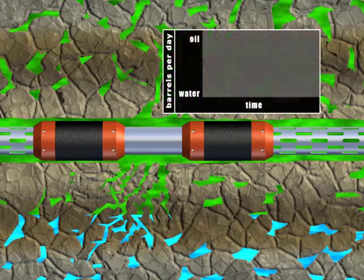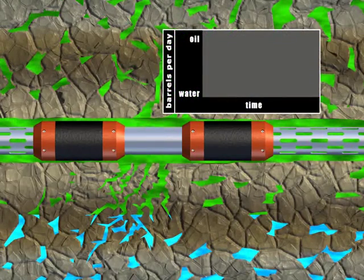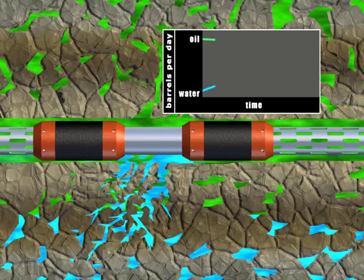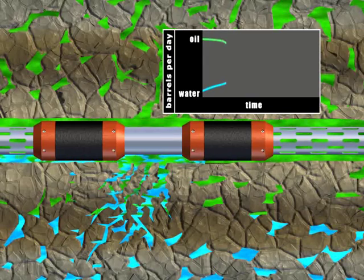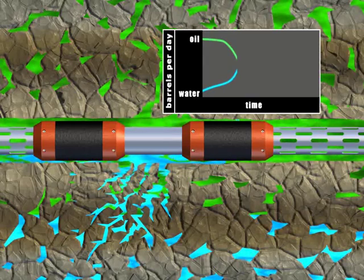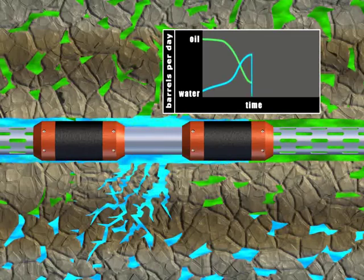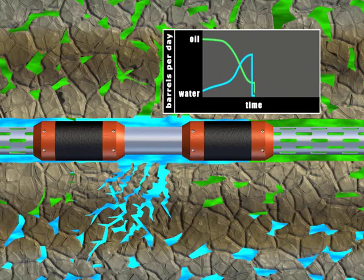The well is then placed on production, allowing the high permeability sections to contribute to an initial high oil production rate. After recovery of the oil reserves from the higher permeability section, water begins to encroach into the wellbore, resulting in a reduction of oil and an increase in water production.